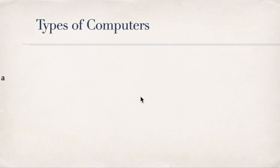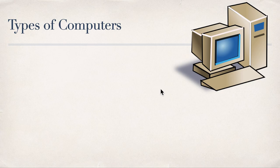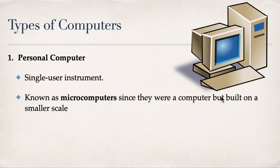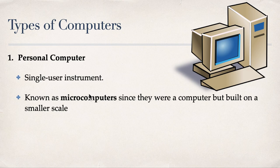Now we talk about the types of computers. First, the one that pops into our minds is the personal computer. A personal computer is a single-user instrument, also known as a microcomputer, since it was built on a smaller scale. You may imagine computers way back — like the ENIAC — which occupied a whole room. When the personal computer was introduced, it became a single-user instrument, no longer requiring people to plug wires in and out. So there are types of personal computers.